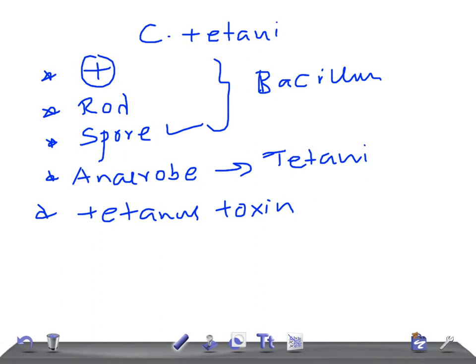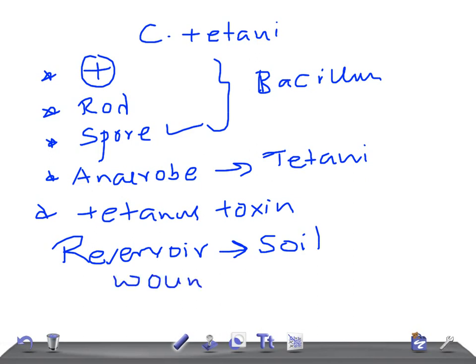These are the important features: gram positive rods, spore-forming, anaerobes, producing tetanus toxin. Now, what's the reservoir? It's soil. And how is it transmitted? Through a punctured wound — if it's contaminated with metal, or a human bite as well.